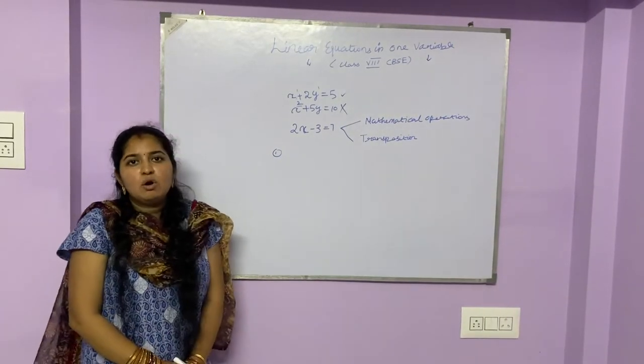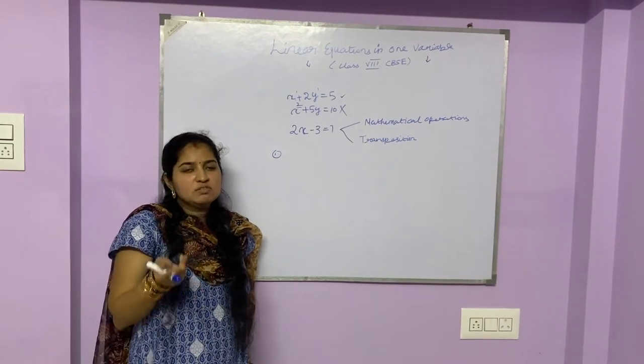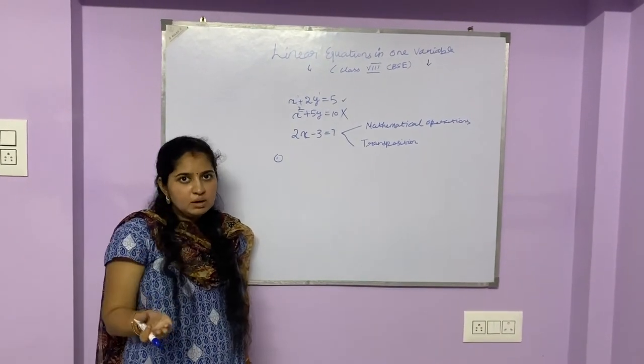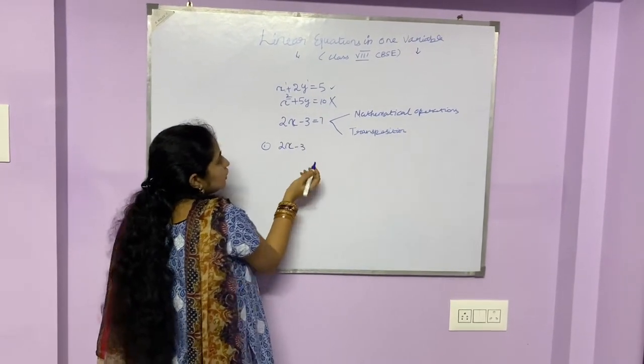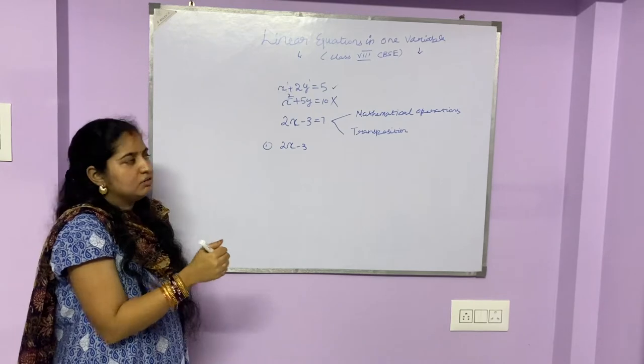Now, basic mathematical operations. Like I said, whatever operations we perform on the left-hand side should also be performed on the right-hand side. To make it simple, I am going to add 3 to both sides of the equation.